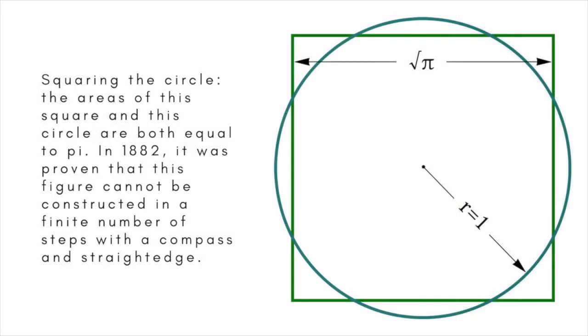That left only squaring the circle in limbo. For this construction to be possible using unmarked rule and compass, it would have to turn out that the number pi, the ratio of the circumference to diameter of a circle, was the root of a polynomial of degree 2. This seemed highly unlikely, even as early as the 17th century.